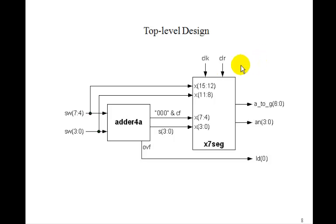You can then design a top-level design using that adder 4 component along with the X7seg. And then you can add the top 4 switches to the rightmost 4 switches, and you can have the sum displayed on the 7 segment display. The sum 3 downto 0 will be the rightmost digit. For the next digit, we'll take the carry flag and 3 leading 0s. So if you get a 1, it will show up as the carry flag in X4 here. And then we'll show the switch numbers on the leftmost 2 7-segment displays.